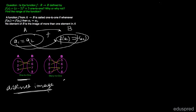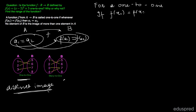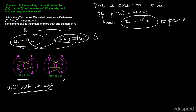Now coming back to the question, we were asked if f(x) is a one-to-one function. For a one-to-one function, if f(x1) is equal to f(x2) then we have to prove that x1 is equal to x2. So we are given that f(x1) is equal to f(x2). We know that f(x) is equal to (x minus 2) whole square plus 3. Note that here the input is x.